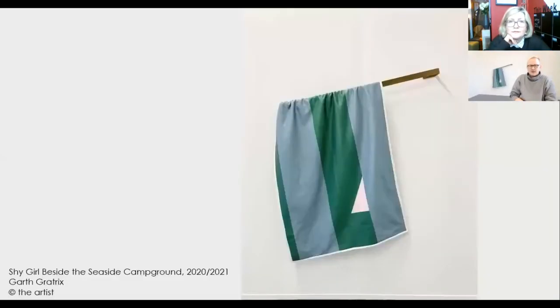The work that's currently due to be acquired, thank you very much, is called Shy Girl Beside the Seaside Campground. Quite simply, it's a standard beach towel hanging slightly skew-whiff on a bronze powder-coated steel bar. It's relevant to my work in that I'm constantly looking at ways to flirt or cruise relationships between materials in a way that's referential of LGBTQ identity. I like to explore a precariousness to something that is maybe otherwise rigid in terms of abstraction and geometry in the use of stripes and triangles in the composition of this work.